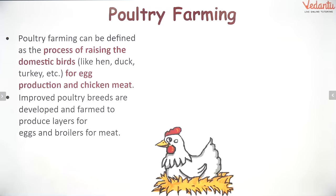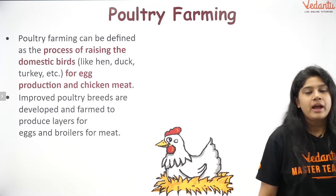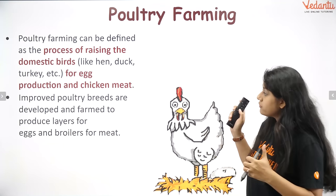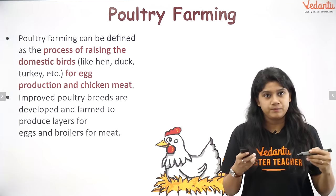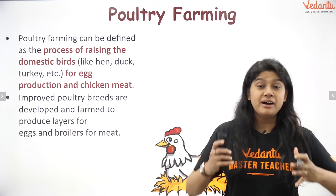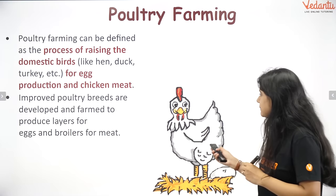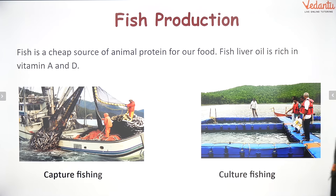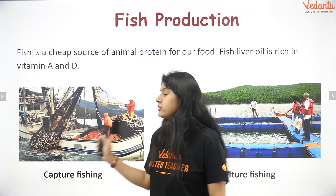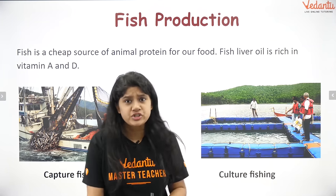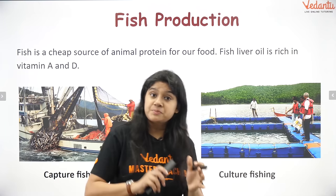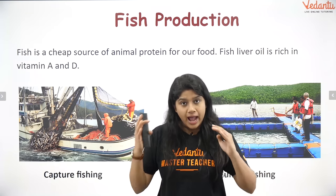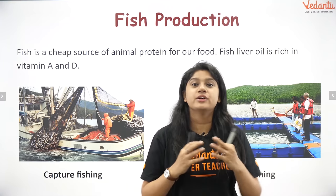Next is poultry farming: birds provide eggs, meat, etc., and they need proper shelter, a proper environment for breeding, and medical facilities to keep them disease-free. Then there is fish production. India is rich in both fresh water and sea water, giving us two types of fishery: capture fishing and fish culturing. Marine fishery provides ocean fish, and freshwater fisheries also exist. Both help the population get a great source of Vitamin A and other important nutrients.